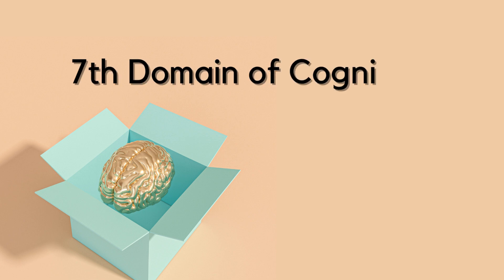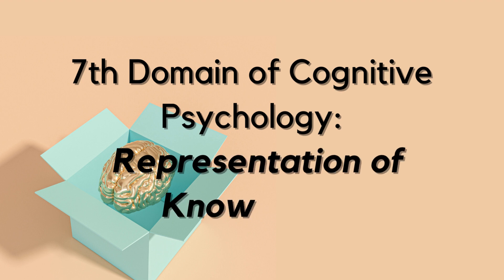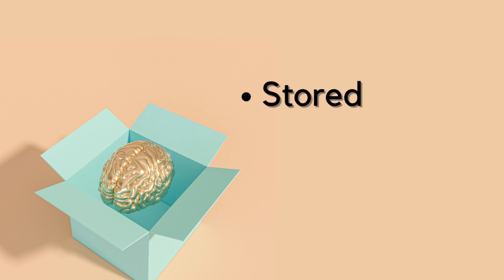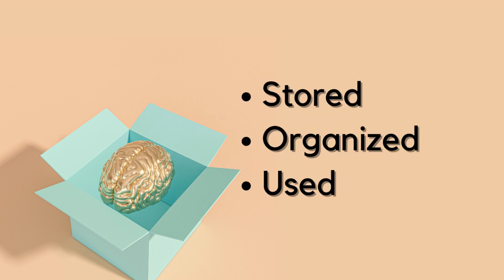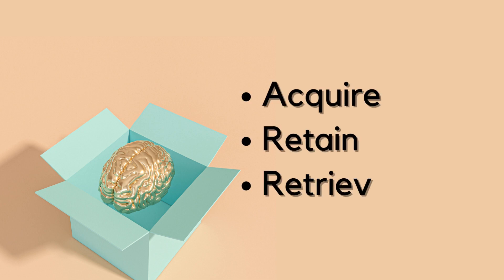Today we will talk about representation of knowledge as the seventh domain of cognitive psychology. In cognitive psychology, the representation of knowledge refers to how information is stored, organized and used in our minds. It involves the mental structures and processes that allow us to acquire, retain and retrieve knowledge. Here's a simple explanation with examples.